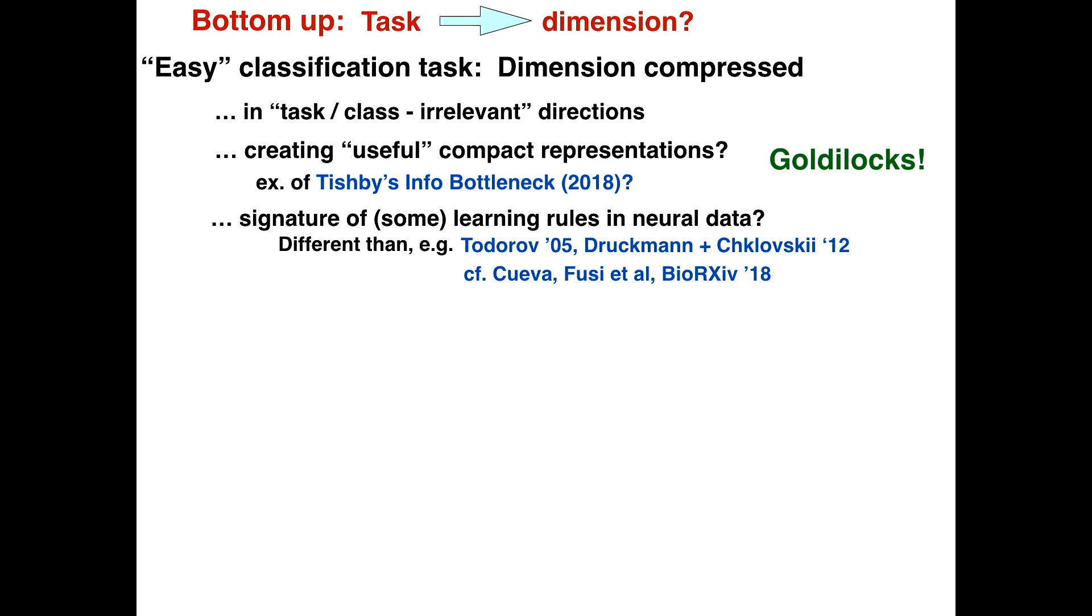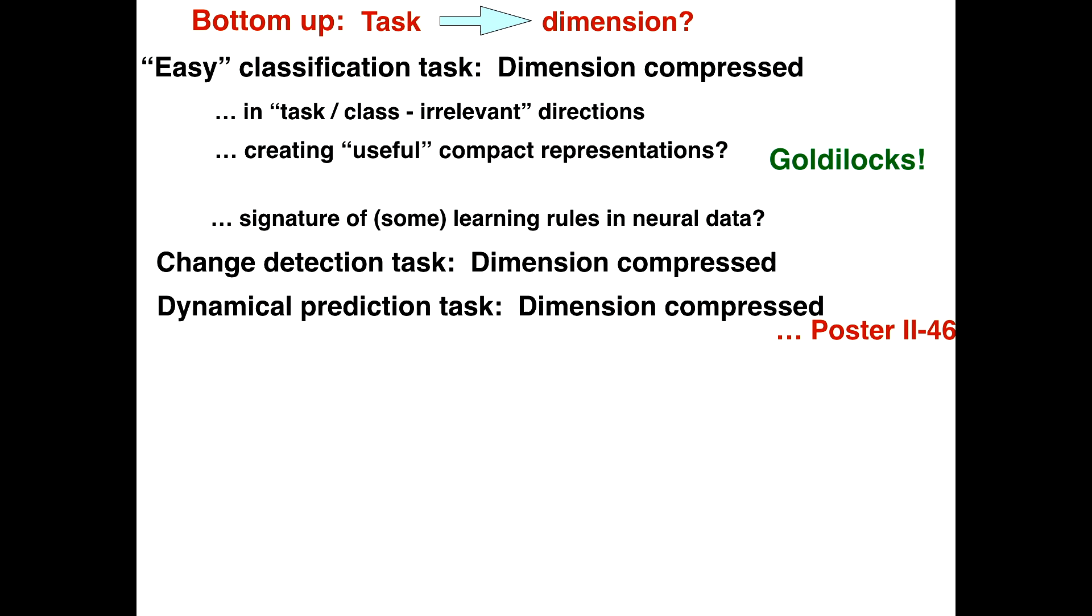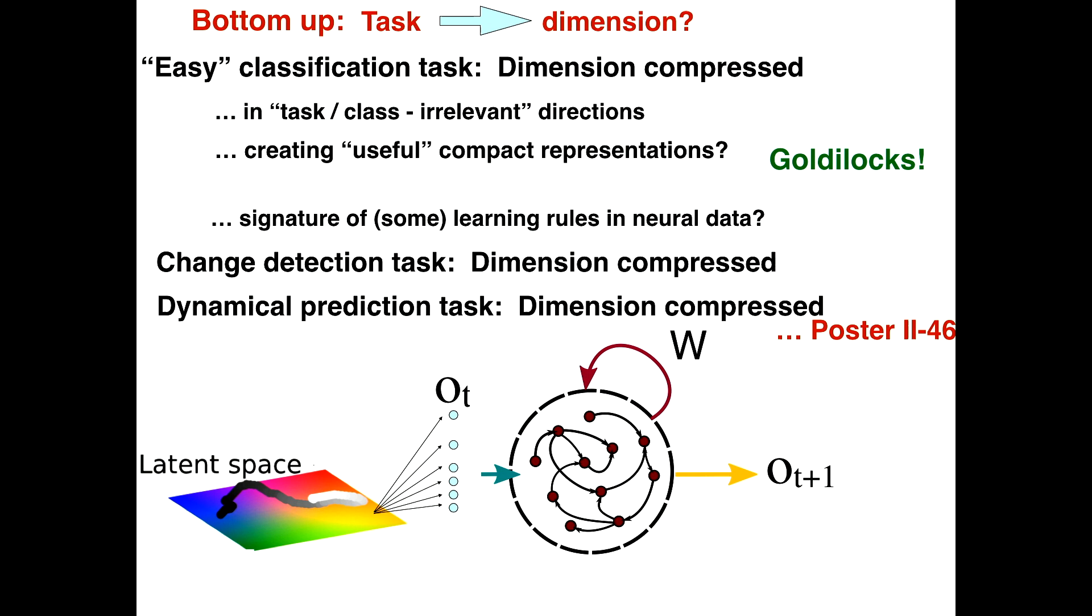Okay, and then we looked at the question of whether this is a useful signature of learning rules in neural data. And I want to point out that what does useful mean? Useful means potentially distinguishing among different theories. Here we have, for recurrent neural network training, a squashing of dimensionality in irrelevant directions. But that is not the case for all theories of how networks might learn. Optimal control theories, as in the first citation, preserve variability in certain cases in task orthogonal directions, as do other network theories put forth by Markram and Scholl. Time to stop, eh? Yeah, and we will. And then we looked in a change detection task. We found a similar compression of dimensionality.